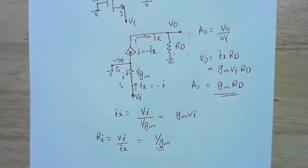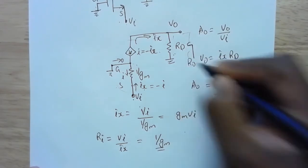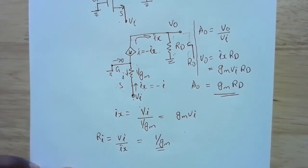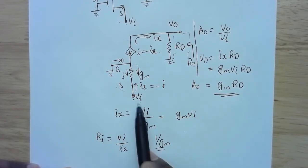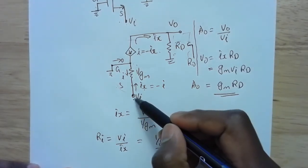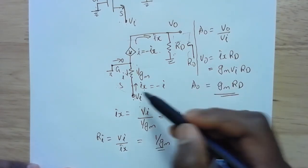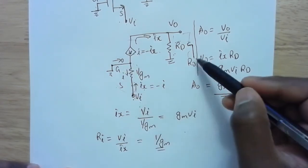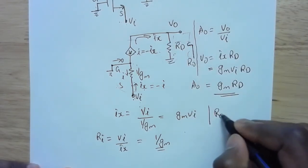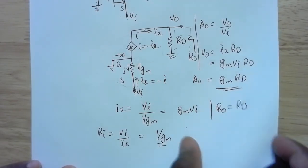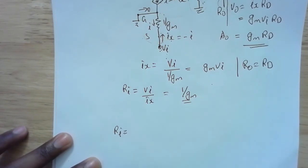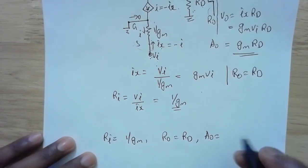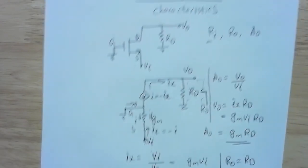Finally, to calculate the output impedance RO, I zero the input and look into the output. If the input is zeroed, the voltage drop across 1/gm is zero, meaning that current is zero — so that branch is open. The only resistance looking in is RD, so RO equals RD. To summarize: input impedance RI equals 1/gm, output impedance RO equals RD, and open circuit voltage gain Ao equals gm·RD.